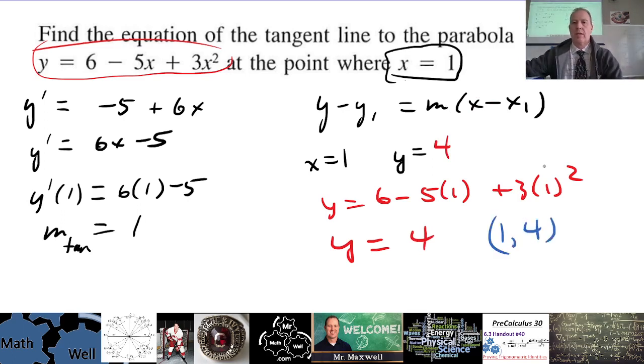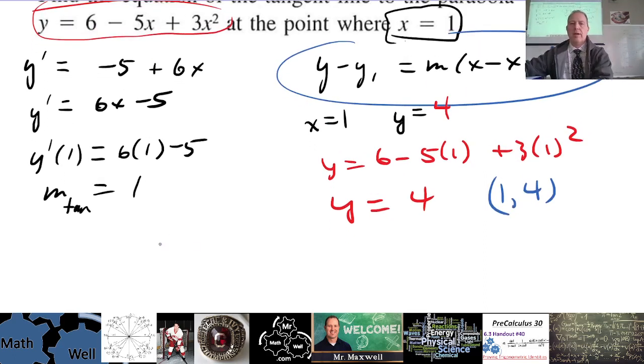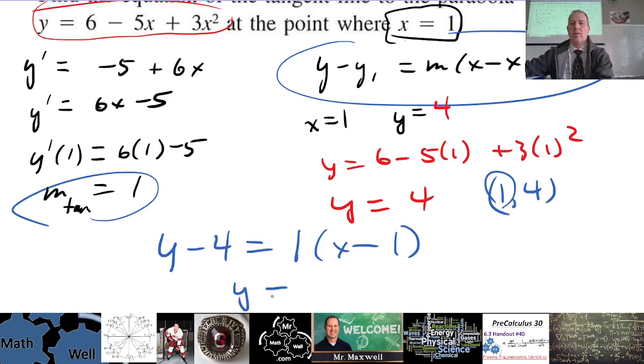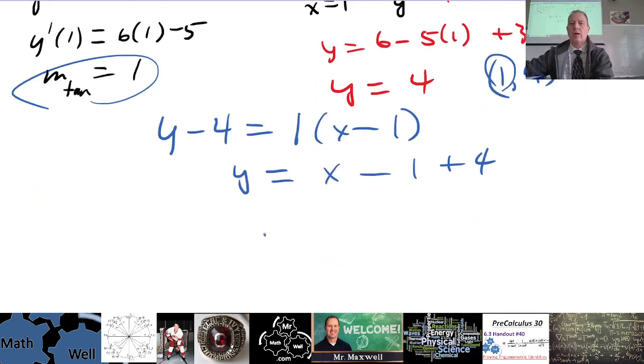But it looks like now we have a point on this tangent line that is the point (1, 4). So we go back to this right here and we're gonna have y minus 4 equals the slope is 1 times x minus the x value is 1. Y equals x minus 1 plus 4, or y equals x plus 3.